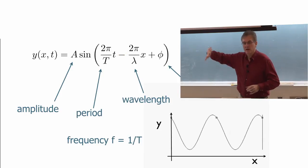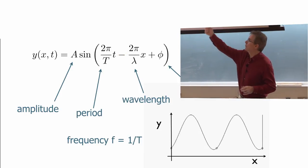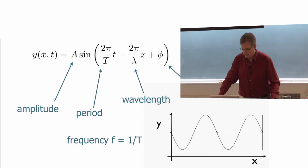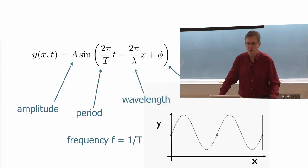Now, points on the wave, like the wave crest, have the same overall phase, which is, well, in the case of a sine wave, rather than a cosine wave, would be π over 2. Because sine of π over 2 is equal to 1.